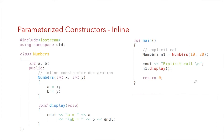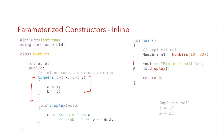Next we have parameterized constructors inline. This is similar to inline function declarations for member functions — instead of writing the function definition outside the class, I write it inline. This is the same program as the previous one, so the output is a equal to 10 and b equal to 20, since 10 and 20 are passed to the constructor and values of x and y are stored into a and b.